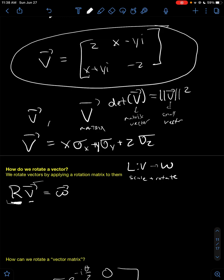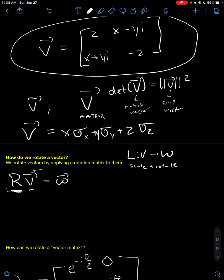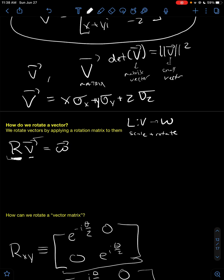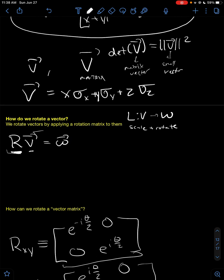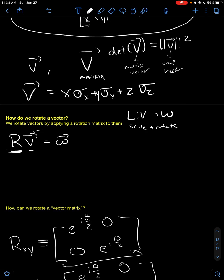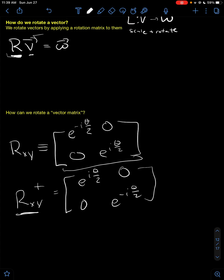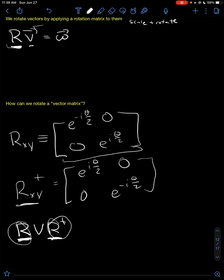We rotate vectors by just applying one rotation matrix to the vector. Now, how can we rotate a vector matrix? We use rotation matrices again, but this time, to rotate a vector matrix, you have to apply the rotation matrix twice. Here is a rotation matrix and here is the transpose of a rotation matrix. So to rotate a vector matrix, you apply it twice. Here I've written them explicitly.